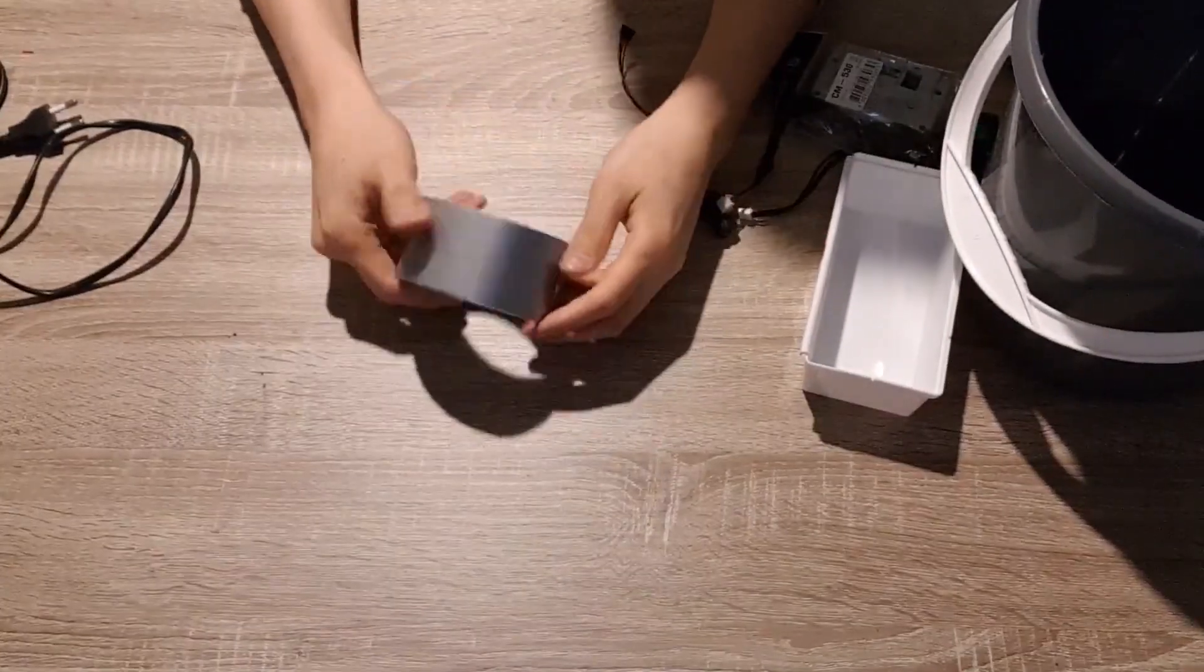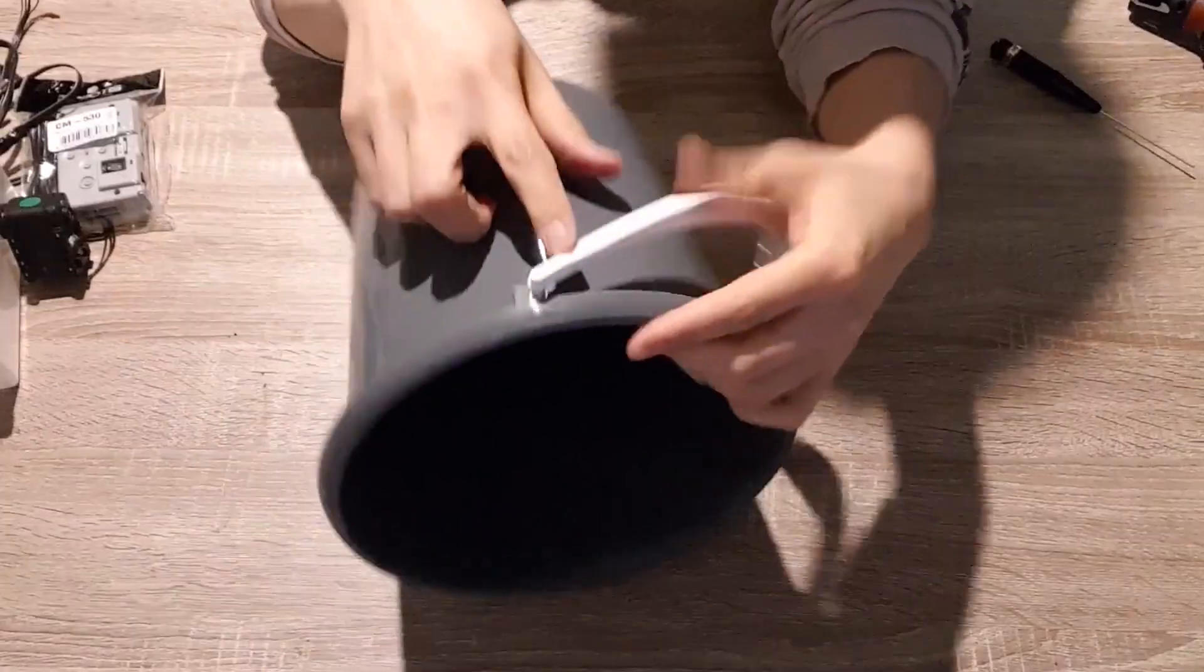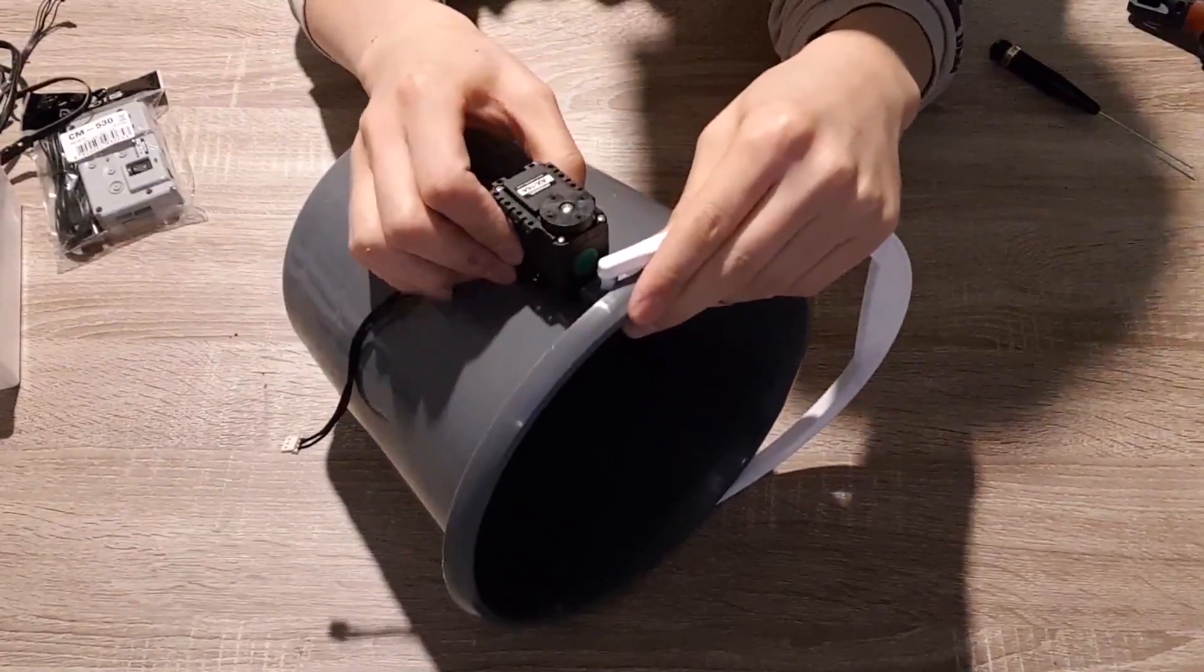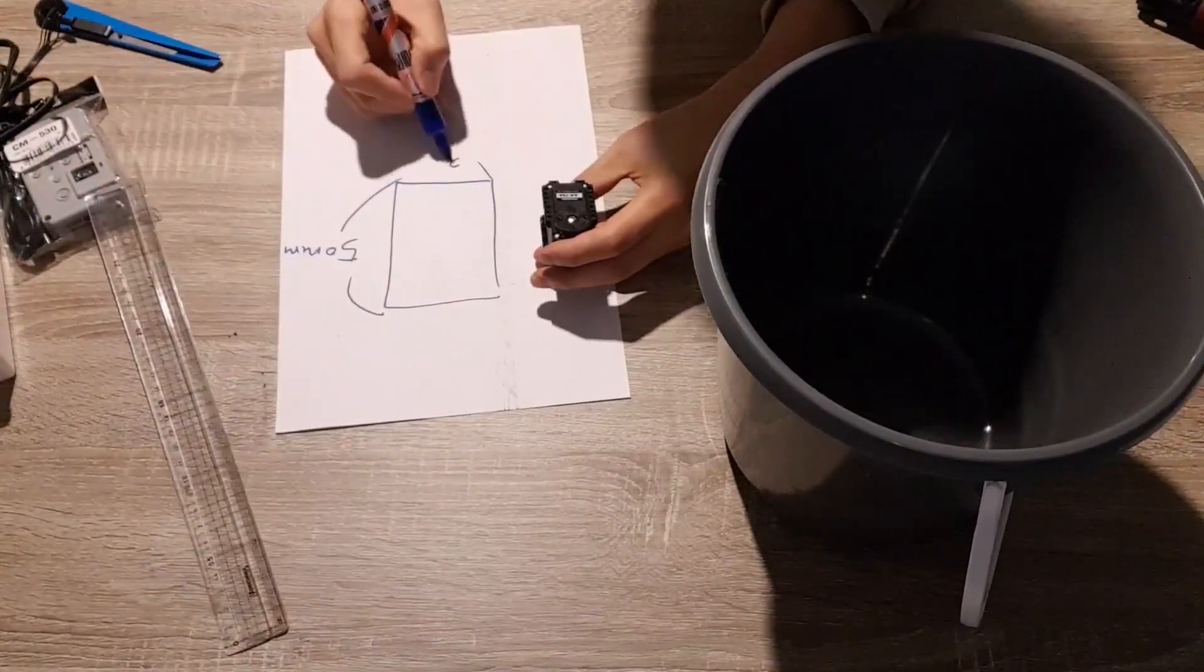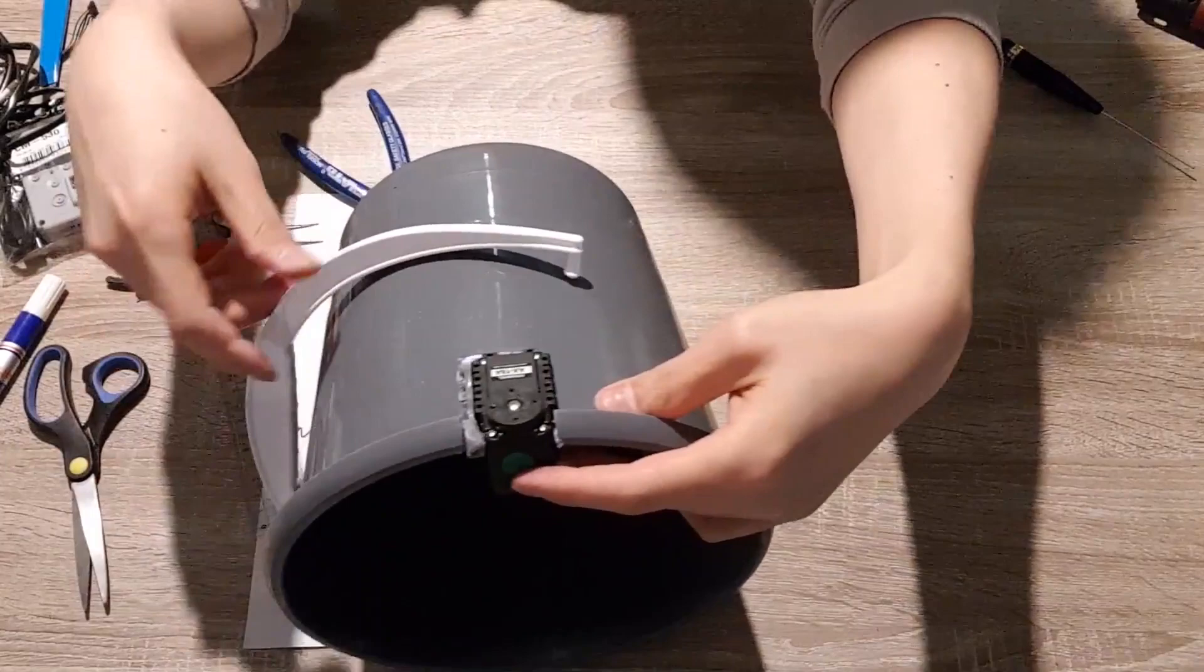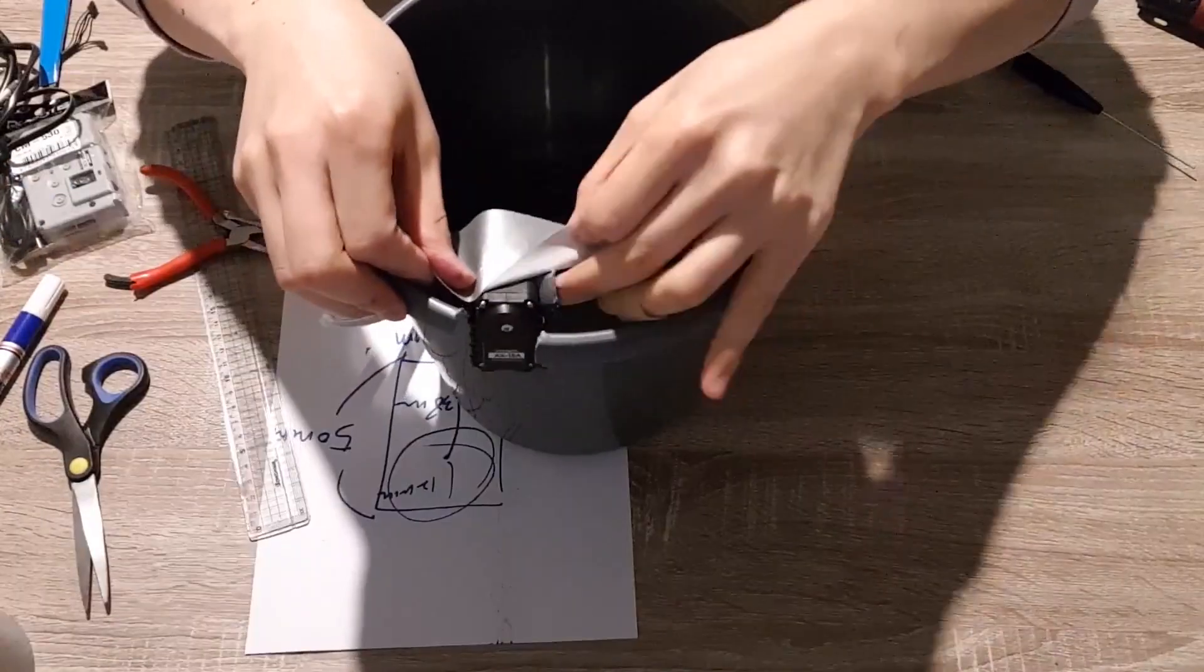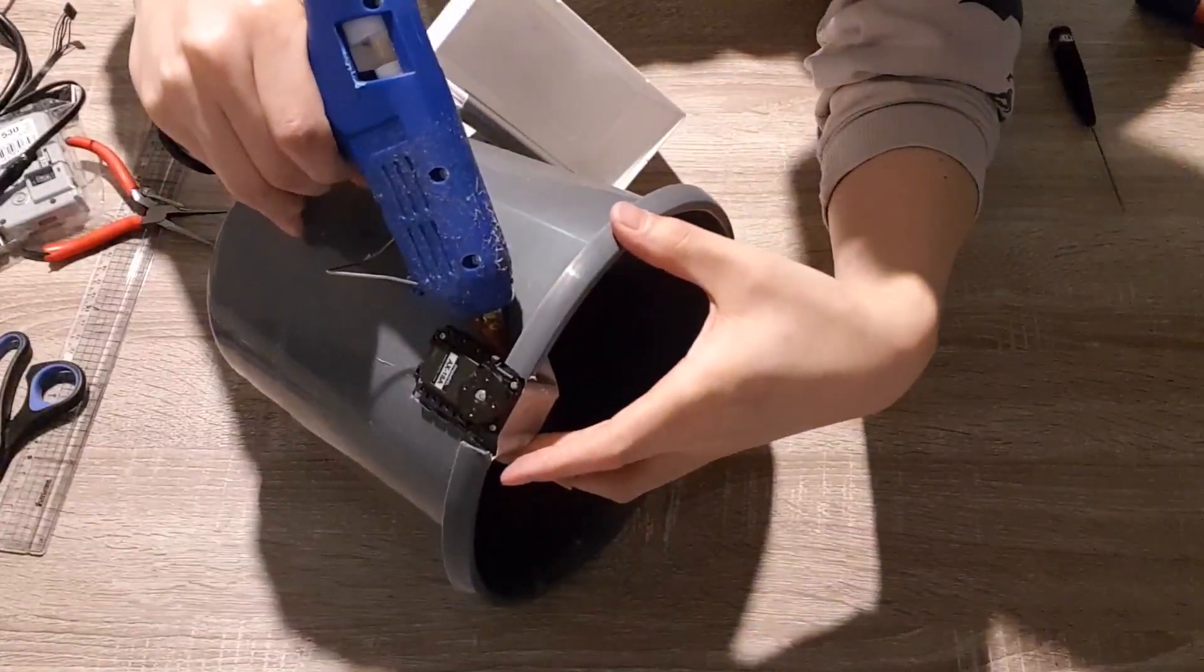Let's make a room for a servo motor. I simply measured its size and cut the basket with a cutter. As I expected, it wasn't fit well, so I just did it a few times. I temporarily fixed it with duct tape and put a large amount of hot melt glue to secure them together.